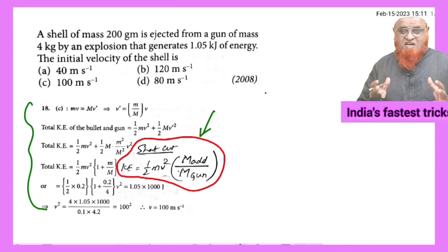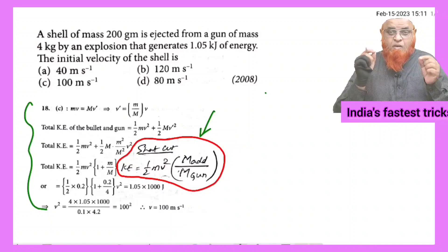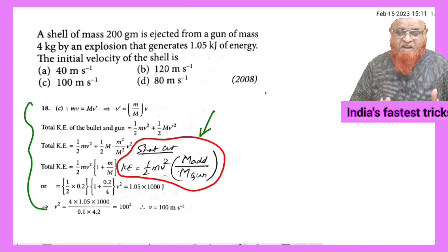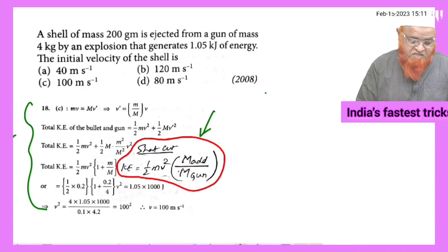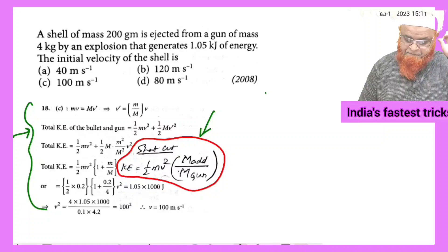Today I would like to discuss a shortcut method for the chapter on work, power, and energy. Let us eliminate the lengthy methods. I have created a shortcut formula here.